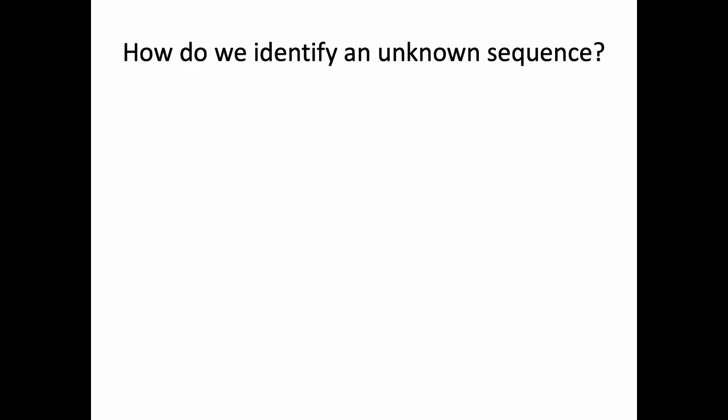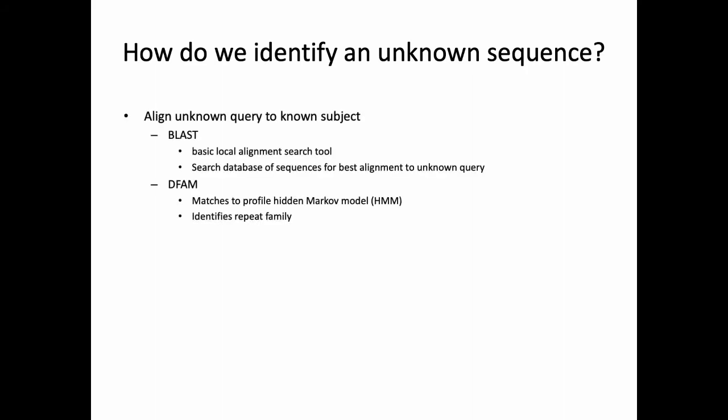Another task we'll be undertaking is the identification of unknown sequences. We're working on a novel genome sequencing project, so how do we identify sequences no one has ever seen before? We're going to use two main tools that work by taking an unknown query and aligning it to a known subject in a publicly available database. The two tools are BLAST and DFAM. BLAST — the Basic Local Alignment Search Tool — searches through sequences to find the one in the database that best aligns to our unknown query. DFAM takes a slightly different approach, targeting specifically repetitive elements by aligning a sequence to a hidden Markov model profile rather than an exact sequence.